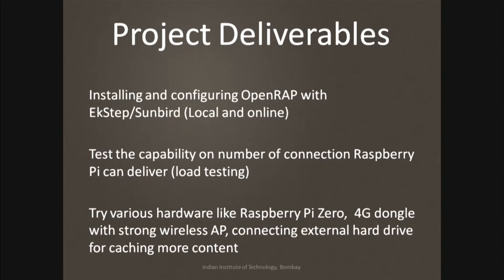We'll also try various hardware options like the Raspberry Pi Zero, which is much cheaper — the regular Raspberry Pi costs around 3,000 rupees while the Zero costs around 800 rupees. We could try running it in cluster mode to see how it performs. For connectivity, if a 4G dongle is connected, many schools and institutions that don't have good broadband can still connect and download data.